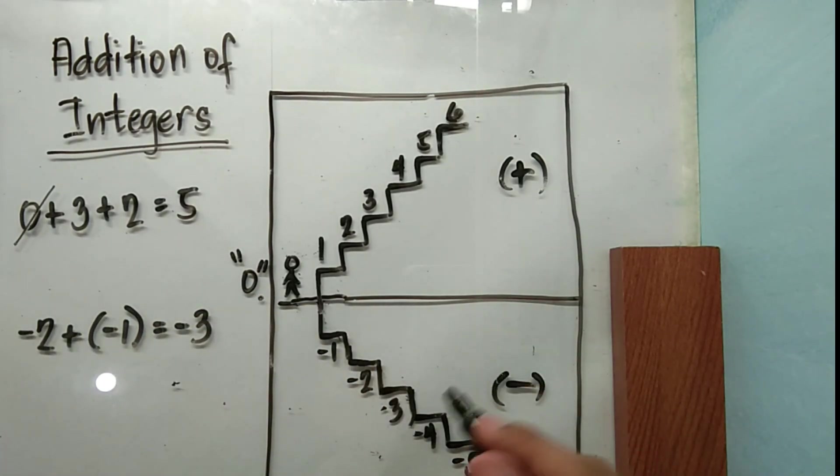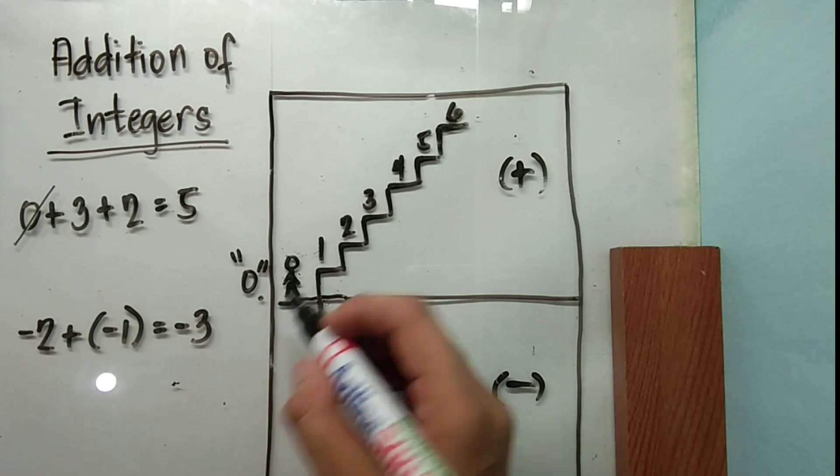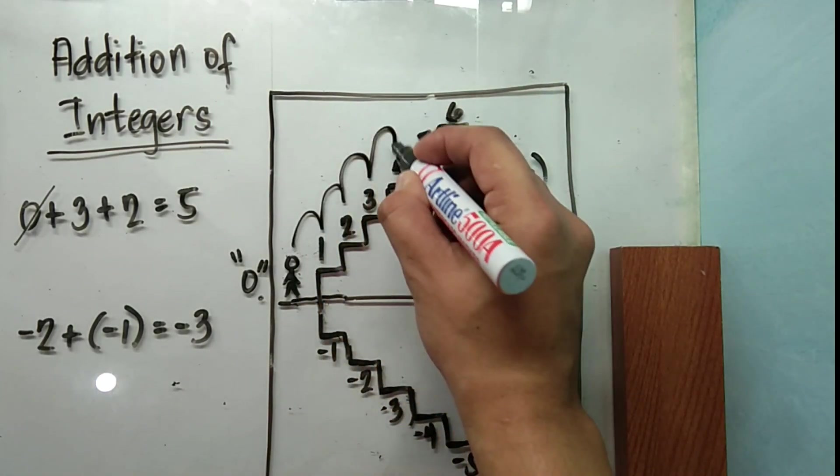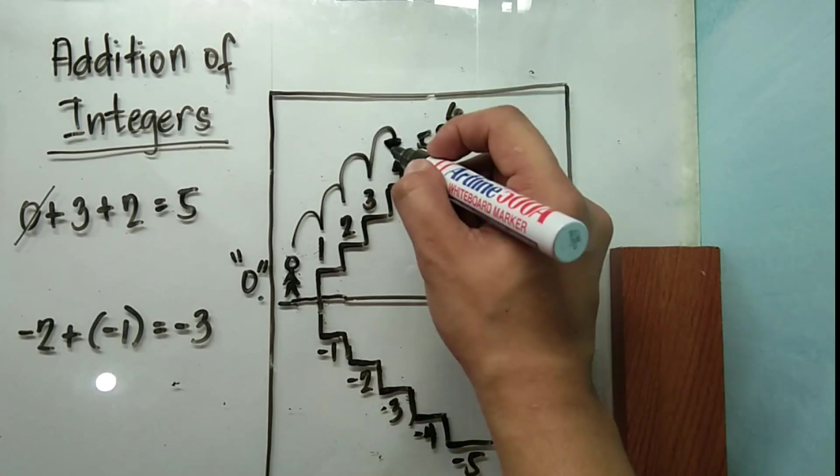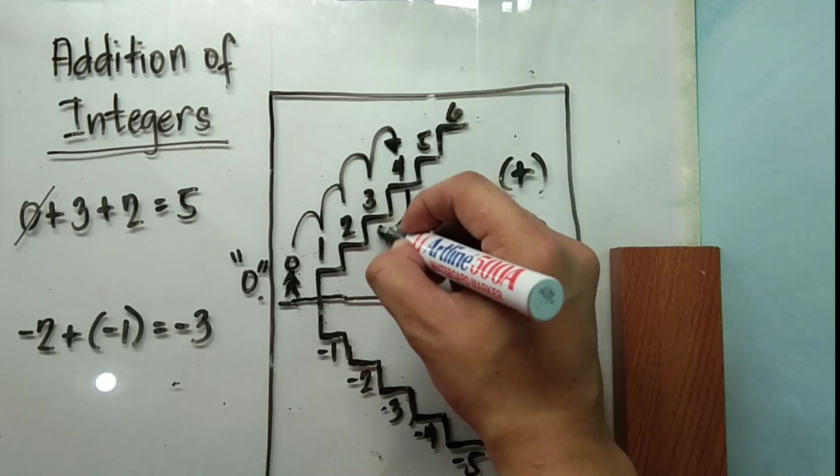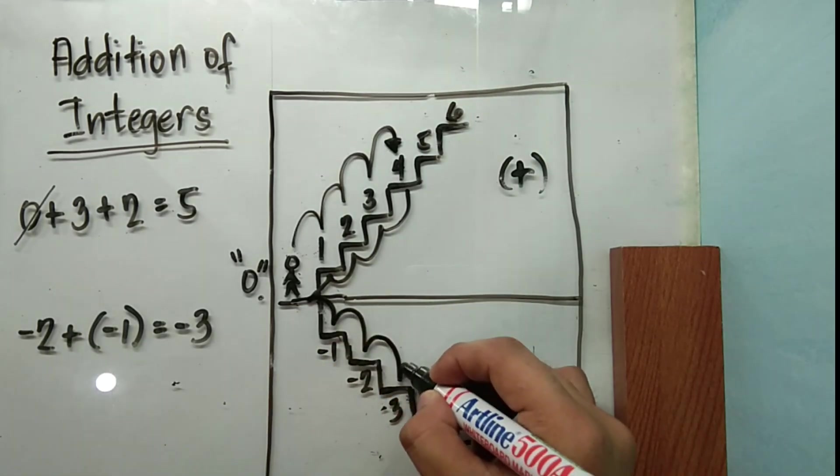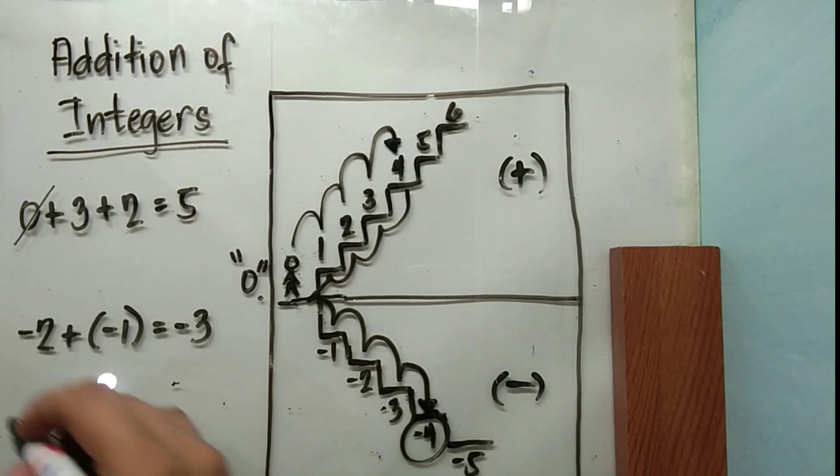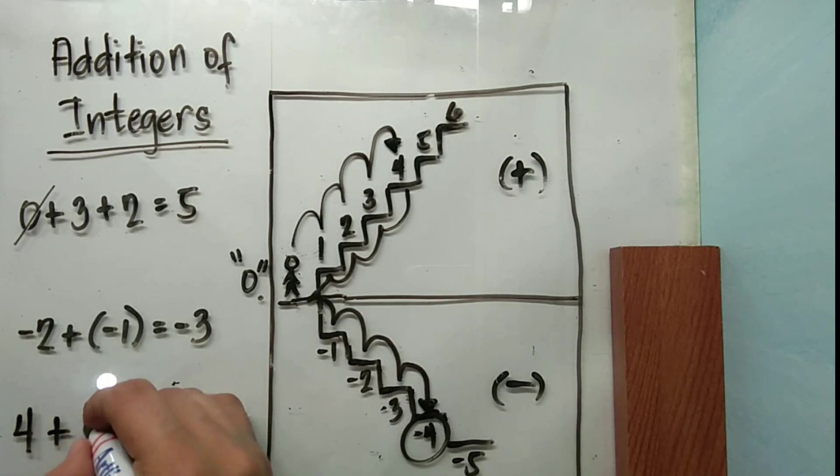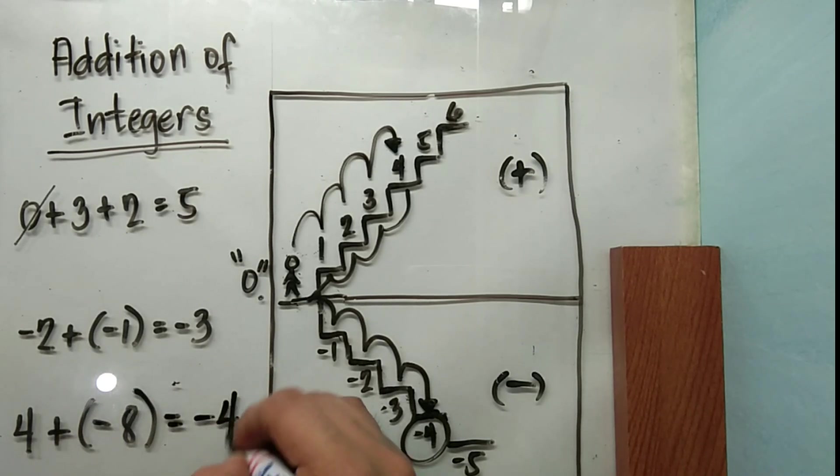Moreover, if the direction varies, let's say you are asked to walk four units upward—one, two, three, and four—then ask again to walk eight steps downward. So going down means one, two, three, four, the initial, five, six, seven, and eight. Your position now is on the negative four value. In number equation, this will be positive four plus negative eight, which is equal to negative four.